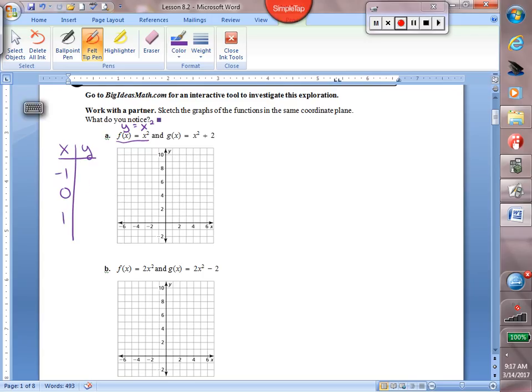Remember, if I put negative 1 in for x, if I square negative 1, I get 1. If I square 0, I get 0. If I square 1, I again get 1. So let's go ahead and graph.